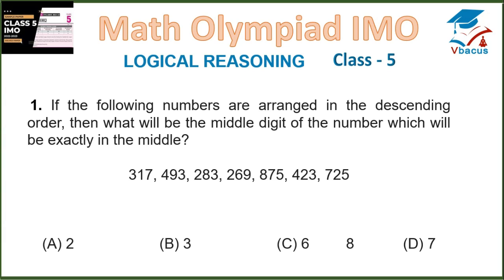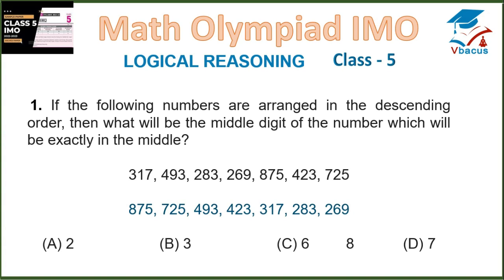Question 1. If the following numbers are arranged in descending order, then what will be the middle digit of the number which will be exactly in the middle? We have to arrange all these numbers in descending order. The numbers are arranged in descending order and the middle number is 423. The middle digit of 423 is 2. So option A is correct.